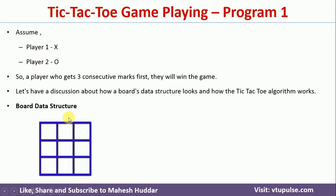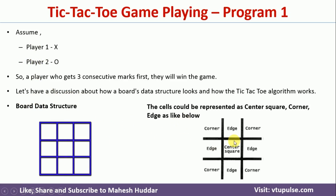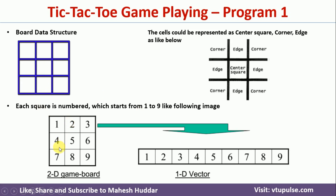The board data structure looks like this. The board is a 3 by 3 grid, with the four corners, edges, and a center square. Each cell is marked with a number — 1 through 9. This is shown as a 2D game board, and the same thing is also represented as a 1D game board in one dimension.